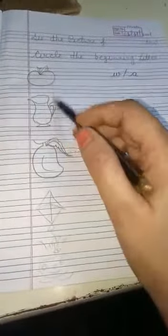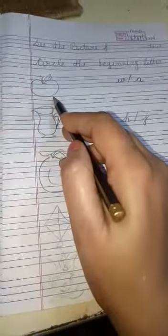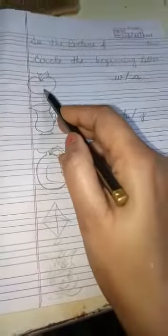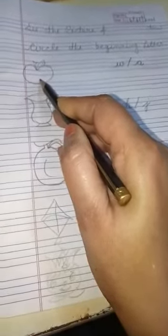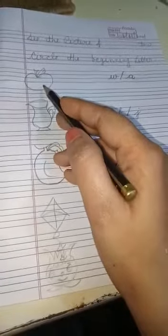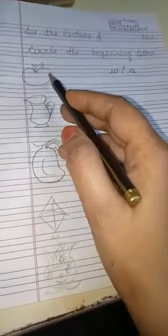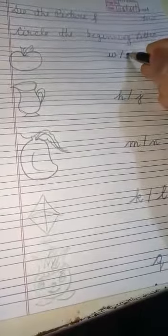Circle the beginning letter in words. For example, apple - what is the first letter? A, A, A. A's sound is the first letter. What is the beginning letter? A. So we need to draw a circle on the beginning letter. Okay?